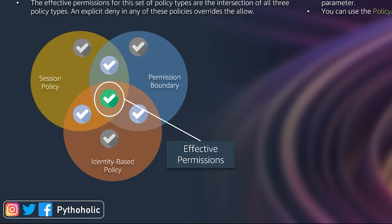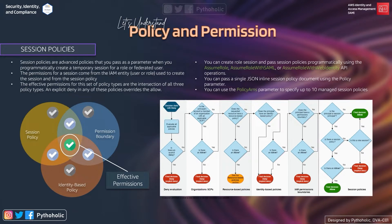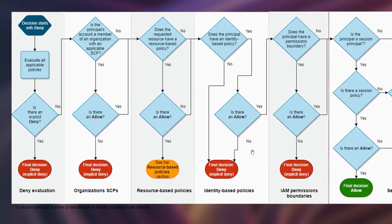The intersection defines the effective permission for the session policy, and an explicit deny in any of these policies overrides the allow. Looking at the flow diagram, keep in mind the session principal — the one sending the request — is going to be either a role session or an IAM federated user session. In IAM, when a request starts, the decision-making begins with a deny. We evaluate all applicable policies; if there is an explicit deny in any policy or statement, the final decision is deny.